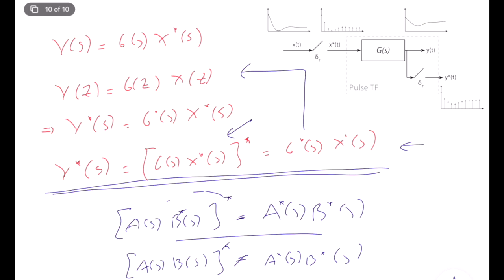For example, if you have g1 of s times g2 of s times x star of s and you want to apply the star operation, technically you should first combine g1 of s and g2 of s, then apply the star. In the next video lecture I will solve some examples where we deal with star signals and pulse transfer function, and I think when we see examples you will understand the concept better.